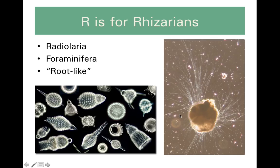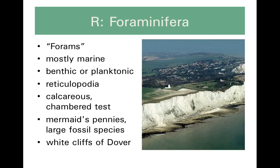We have two phyla to engage with: the radiolarians and the foraminiferans. The foraminifera possess little holes — that's what foraminifera means. Most of them are marine, found in either deep water benthic habitats or shallower planktonic habitats at the top of the water column where they go where the currents take them. They have a special type of pseudopodia called reticulopodia, meaning net-like as opposed to needle-shaped or lobe-y.